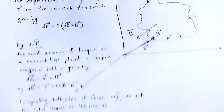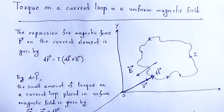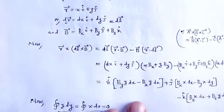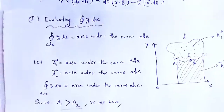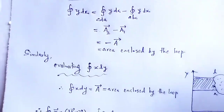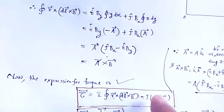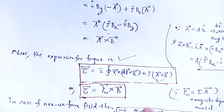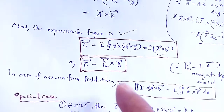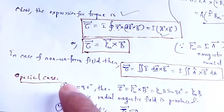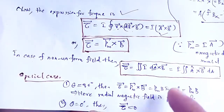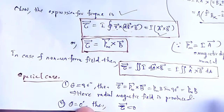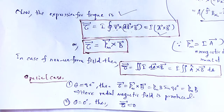The current-carrying loop tends to rotate in an external magnetic field, playing the same role as a compass needle that tends to rotate in an external field, since a current-carrying loop is nothing but a magnetic dipole. With the help of this video lecture you understand torque on a current loop placed in a uniform magnetic field — the mathematical expression and its form in terms of magnetic dipole moment. Thank you.